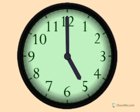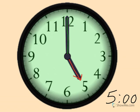5 o'clock. Show me 5 o'clock on your clock. The little hand tells the hour. The little hand points to the 5. The big hand tells the minute. The big hand points straight up is o'clock.